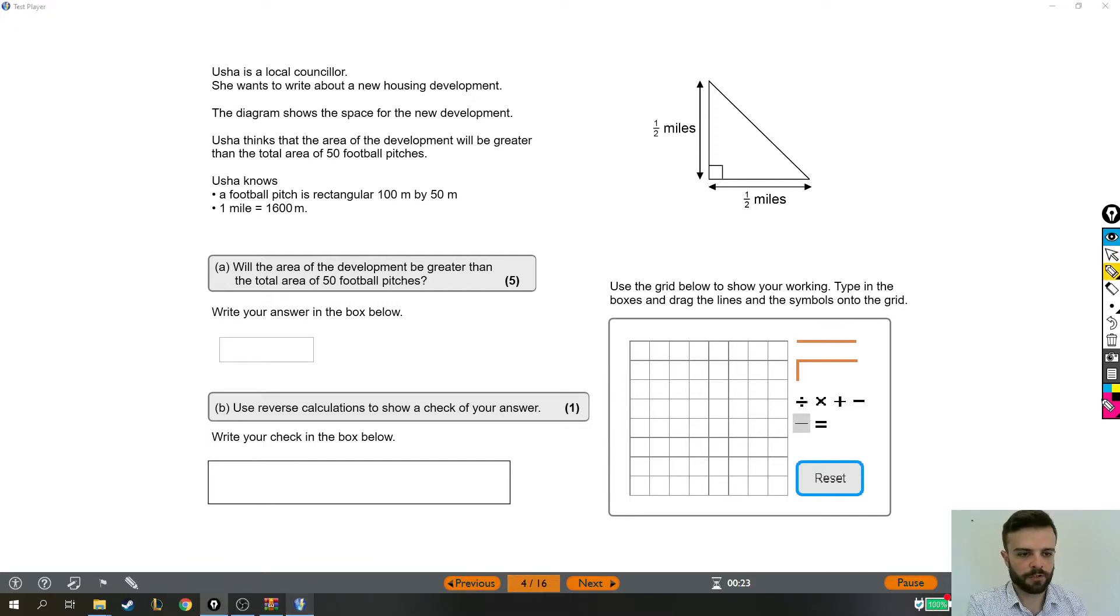Now first thing I'm going to do, just quickly off in one corner, I'm going to draw out one of those football pitches. It is 100 meters by 50 meters and we're wondering if the area of this is bigger than 50 of these. That's what we're trying to work out.